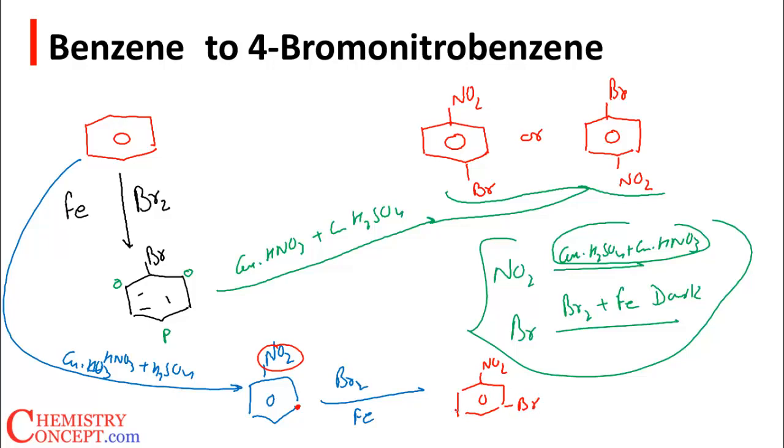nitrobenzene and not 4-bromonitrobenzene. If we switch the steps, the products differ. To carry out the conversion, we'll follow the first approach: first carry out bromination followed